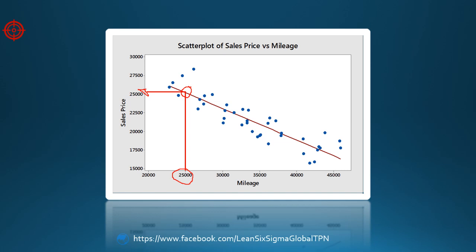That point corresponds to $25,183. So using regression, we predict that when the mileage of a car equals 25,000, it will sell for $25,183.